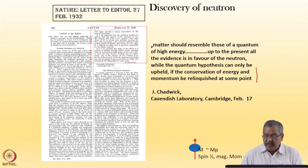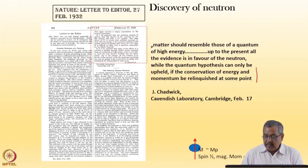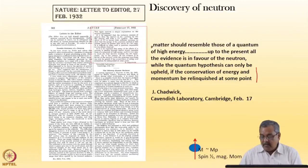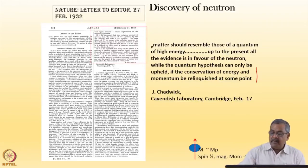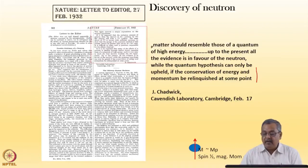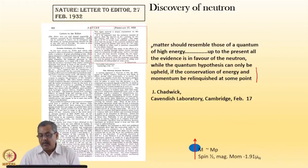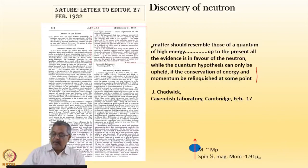The neutron is a spin-half particle with a magnetic moment of minus 1.91 nuclear magnetons. It is a nuclear particle, existing in almost every nucleus.